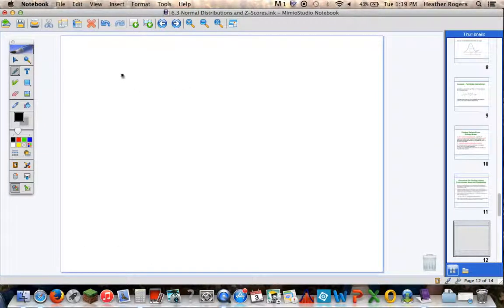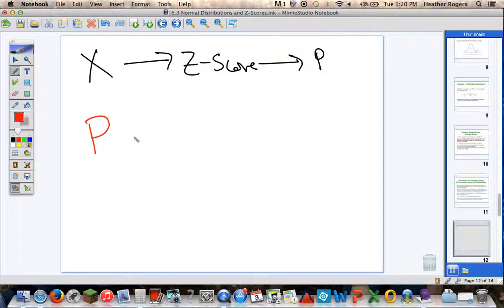Now, we just went from an x value to a z-score to a probability. The next thing we're going to do is go backwards. We're going to go from a probability to a z-score to a specific data value. You can understand that if you're an engineer and you want to create something and you want it to fit 99% of people, you're starting with a probability, and you want to work your way back to that certain data value, the size of the product you're actually going to engineer. You're going to predetermine your probability and work back to a specific data value.